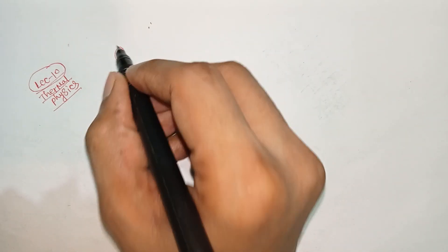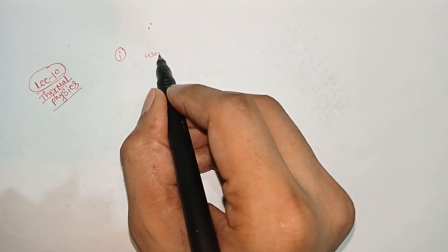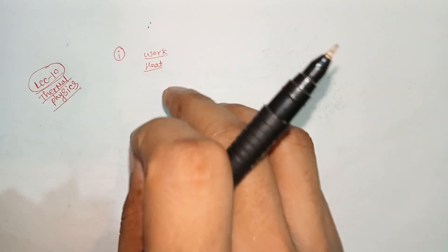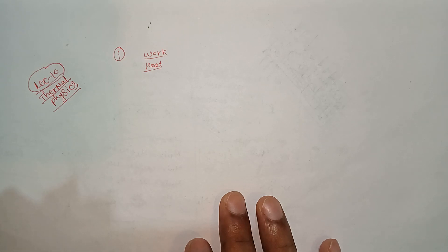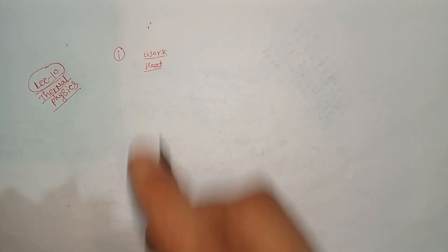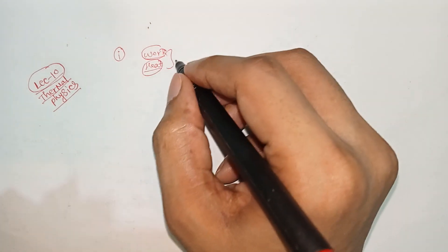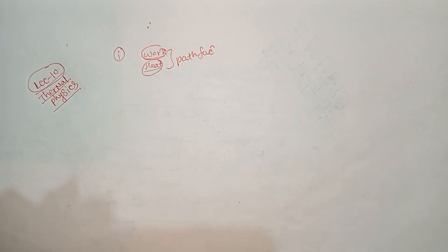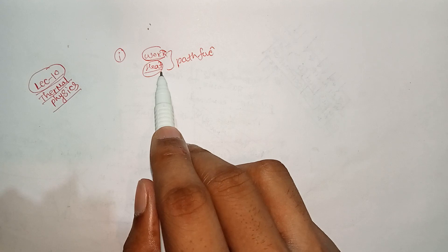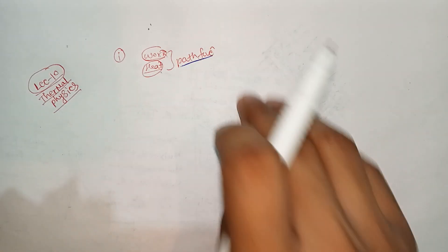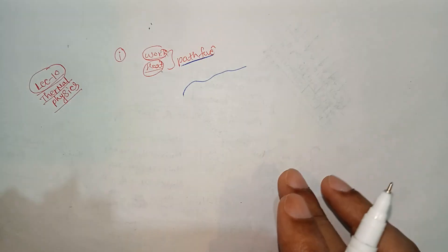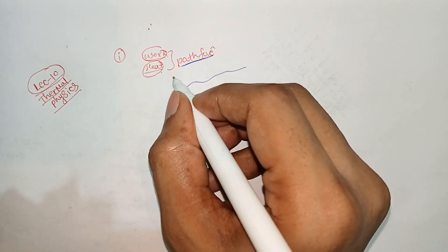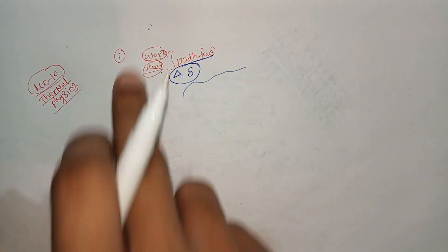The first important point is that work and heat are path functions — they depend on the path or process followed. Since work and heat are path functions, we use the differential parameter delta (∂) to denote work or heat.